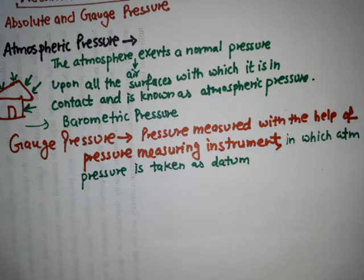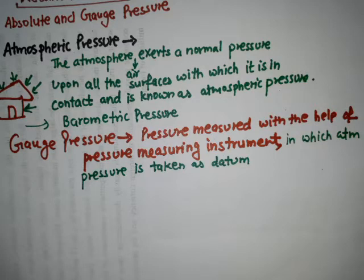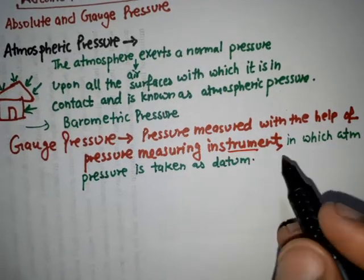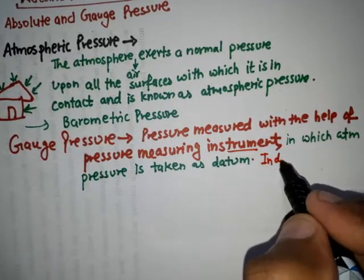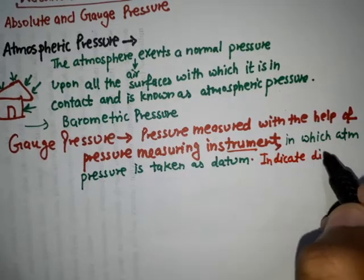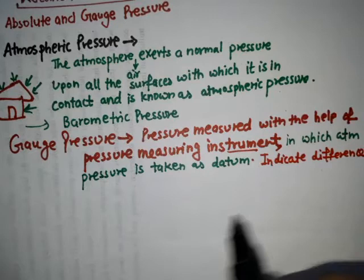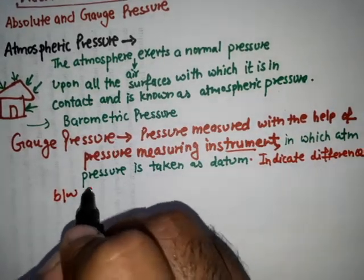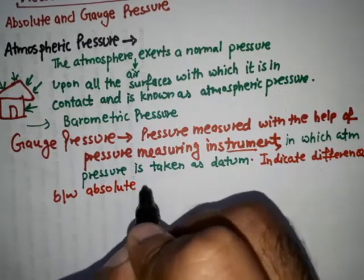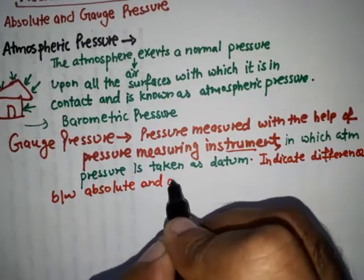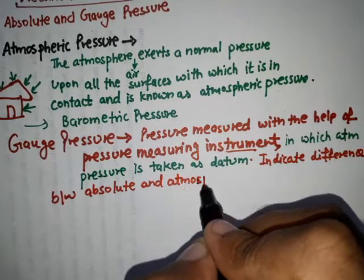Most pressure measuring devices are calibrated to read zero at atmospheric pressure, and so they indicate the difference between absolute pressure and the atmospheric pressure. These measuring instruments indicate the difference between absolute pressure and atmospheric pressure.